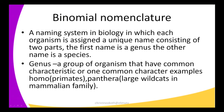We can also define binomial nomenclature as a naming system in biology in which an organism is assigned a unique name consisting of two parts. The first name has to be a genus and the other name has to be a species. So binomial nomenclature is a type of naming system whereby an organism is given two names — the first name being a genus and the second name being a species.